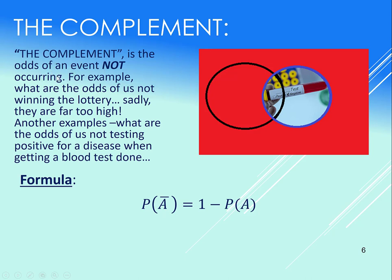It's the odds of an event not occurring. So for example, what are the odds of us not winning the lottery? Sadly, far too high. What's the odds of us not testing positive? Formula for it: you just take one minus the original probability, and notice this bar, this means not A. So P A bar means the complement of A, or it means not A.